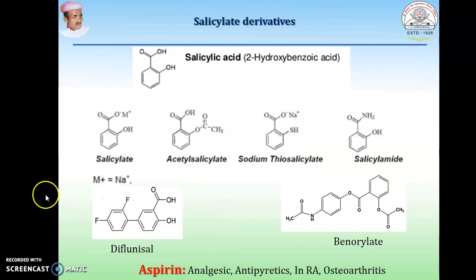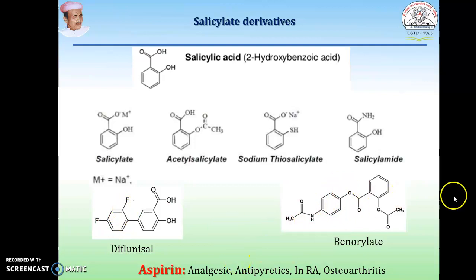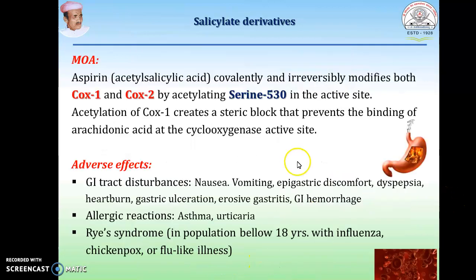Examples of salicylates include aspirin, sodium thiosalicylate, salicylamide, diflunisal — which contains a phenyl ring with fluorine at the 5-position — and benorylate. Aspirin is the major drug; it acts by inhibiting COX-1 as well as COX-2. It carries out acetylation at the serine 530 residue in the active site of COX. When aspirin is metabolized to salicylic acid, that can cause gastric irritation and bleeding.